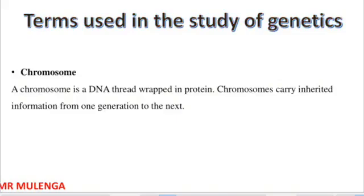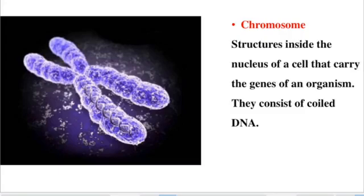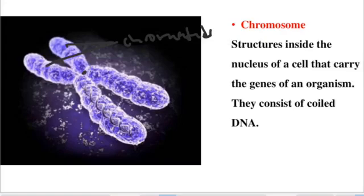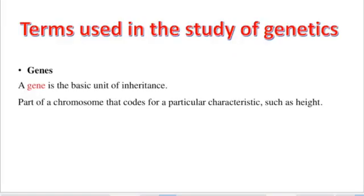A chromosome is a DNA thread wrapped in protein. These chromosomes carry inherited information, and this inherited information is passed on from one generation to the other. Looking at the structure of a chromosome: it has a central mirror right in the middle, and the two strands are called chromatids. Chromosomes are structures inside the nucleus of a cell that carry the genes of an organism. They consist of what we call deoxyribonucleic acid — DNA.